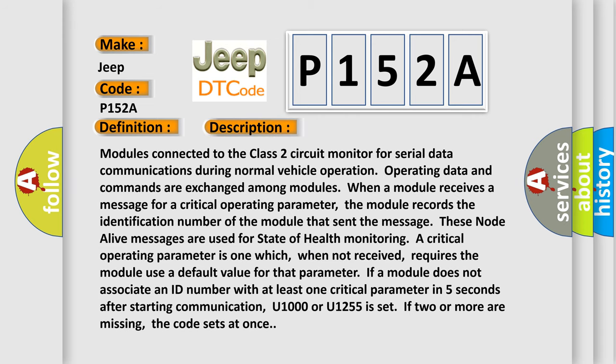Modules connected to the class 2 circuit monitor for serial data communications during normal vehicle operation. Operating data and commands are exchanged among modules. When a module receives a message for a critical operating parameter, the module records the identification number of the module that sent the message. These node alive messages are used for state of health monitoring. A critical operating parameter is one which, when not received, requires the module use a default value for that parameter.